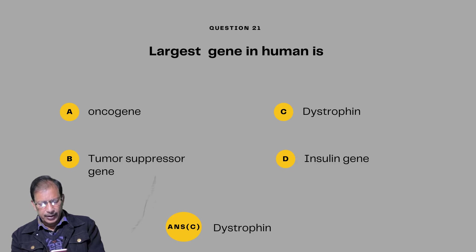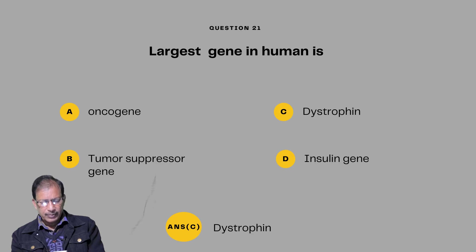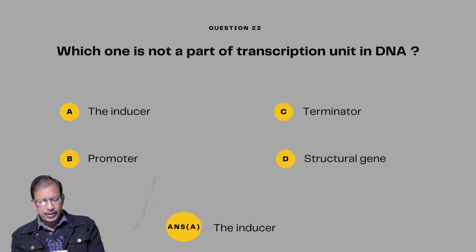Question number twenty-one: The largest gene in human is — A: oncogene; B: tumor suppressor gene; C: dystrophin; D: insulin gene. Answer will be dystrophin — it is the largest gene in humans. Question number twenty-two: Which one is not a part of the transcription unit? Options are inducer, promoter, terminator, and structural gene. Answer will be the inducer.